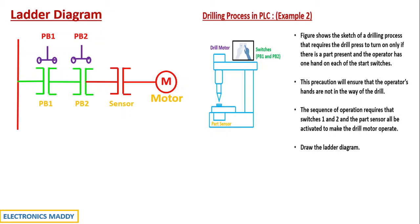If there is a part in place, the sensor detects it and it becomes logically high — equal to one — and gets activated. The rung corresponding to it also gets energized, current flows through the motor, and the motor gets energized. Once the motor gets energized, the drilling gun actually starts working and the desired operation according to the drilling process can be achieved.